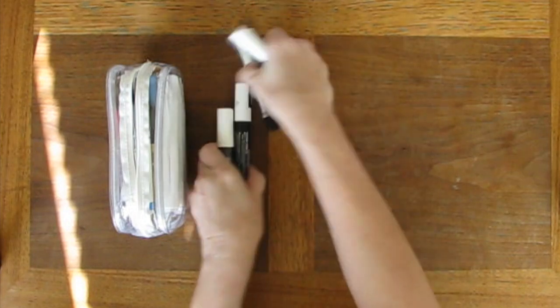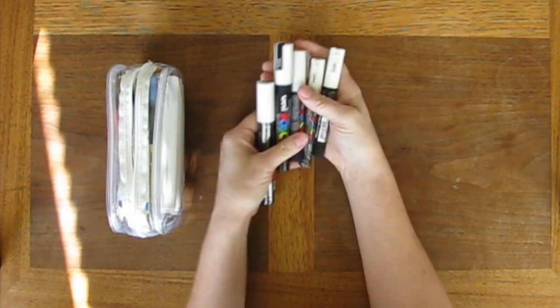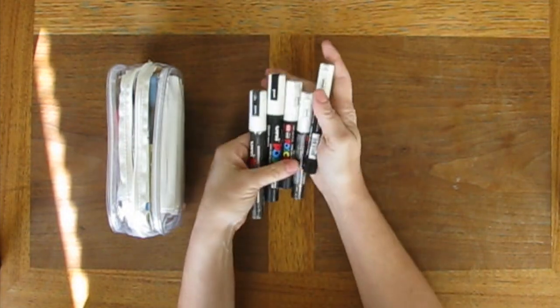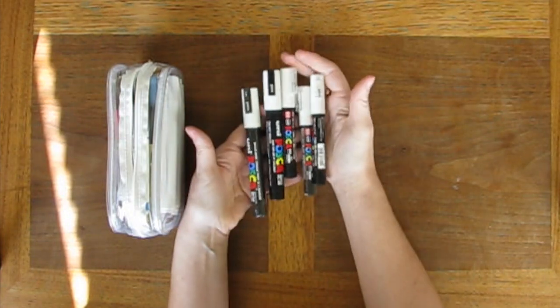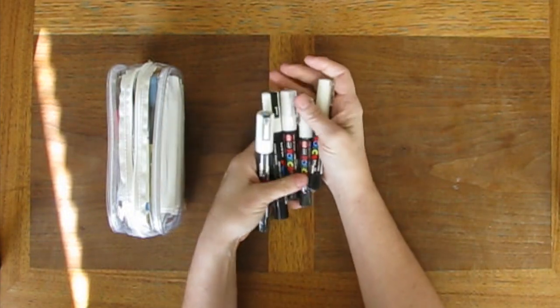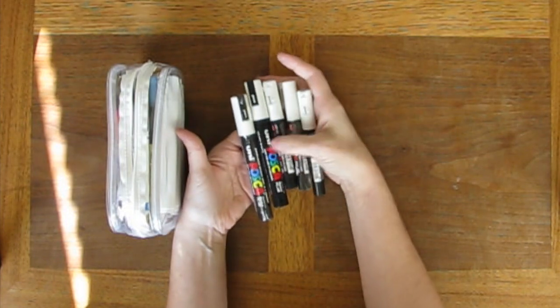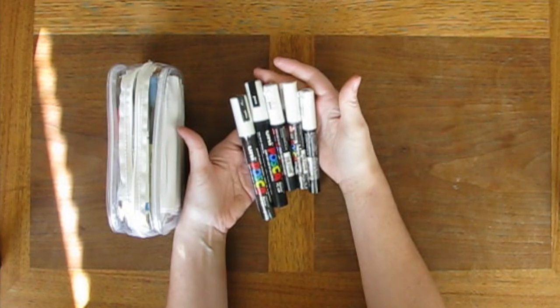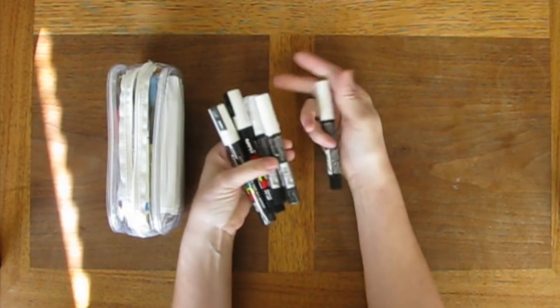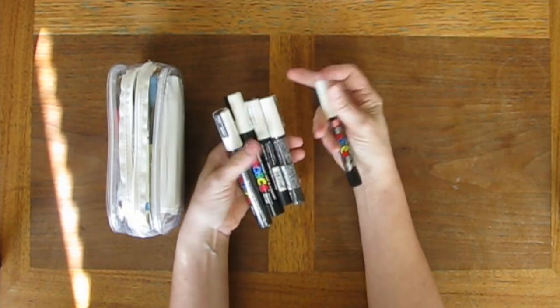And I think all of these are Posca pens, which clearly are some of my favorites, especially for white. They have a nice, thick, opaque, white paint in them. And, they write clearly.